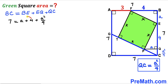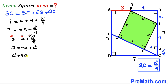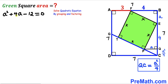Moving the 4 to the other side, 7 minus 4 gives us 3 equals a plus a squared over 4. Multiplying through by 4 to eliminate the fraction: 12 equals 4a plus a squared. Rearranging, we get the quadratic equation: a squared plus 4a minus 12 equals 0.